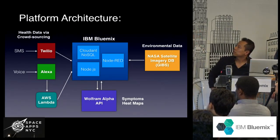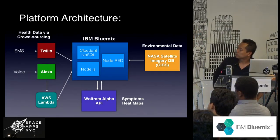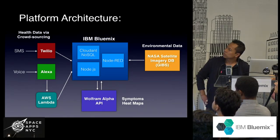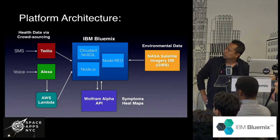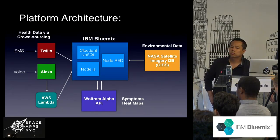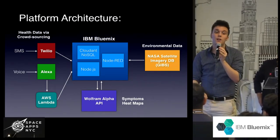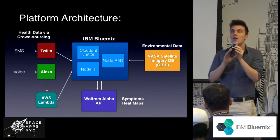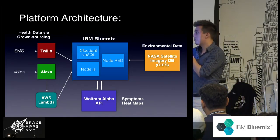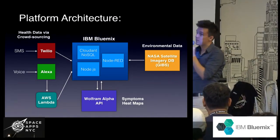This is essentially our platform architecture. You get input in through voice and SMS through Twilio and Alexa. Alexa works through the AWS Lambda event system, and then it goes through IBM's Bluemix, which allows us to programmatically store all of the events that happen. You can have that graph data for later use if you want to analyze it. We analyze it through Wolfram, and we use the GIBBS imagery.